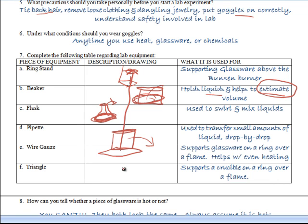And finally, a triangle. This is used to support a crucible on top of a ring. So again, you put it up here, and then you can put the little crucible inside, and then you can put the flame underneath, and really get the flame up and around the sides of the crucible.